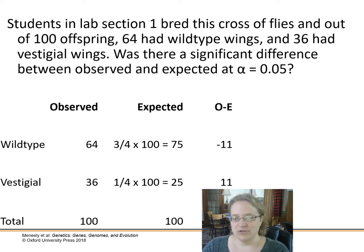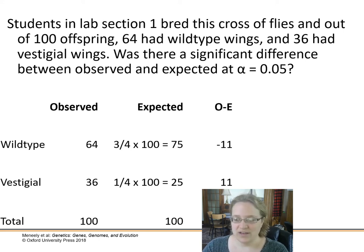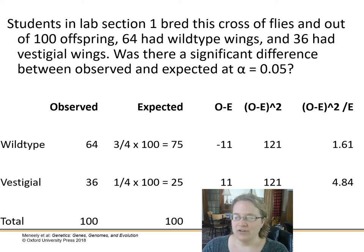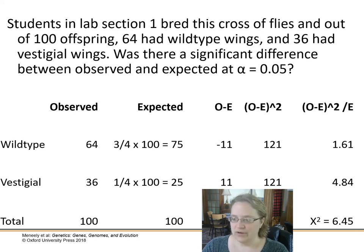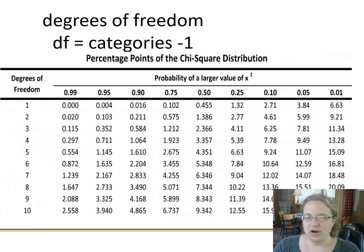Next, we take observed minus expected to find the difference. In this case, the difference is 11 — we have 11 fewer wild-type than expected and 11 more vestigial than expected. Then we square that difference, and in our final column we take the squared difference divided by the expected. We get 1.61 for wild-type and 4.84 for vestigial. The last step is to add those up to get our chi-square value, which comes to around 6.45.